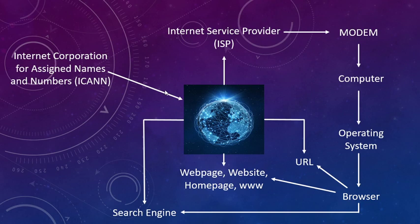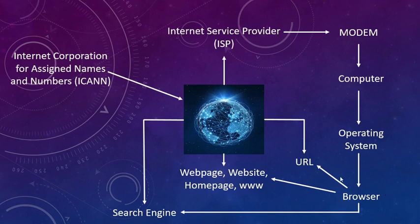These website addresses are given by ICANN. URL stands for Uniform Resource Locator. For example, if you are typing www.google.com in the web browser, it means you are accessing the Google website through a commercial domain — that is .com — via the World Wide Web. Across the globe, through this commercial domain, you are accessing the Google website or Google web page, and that website address is provided by ICANN.